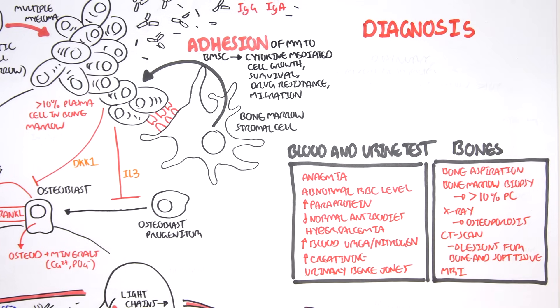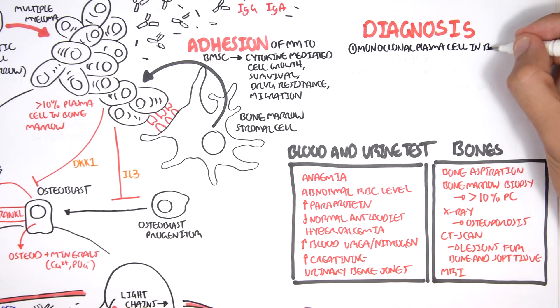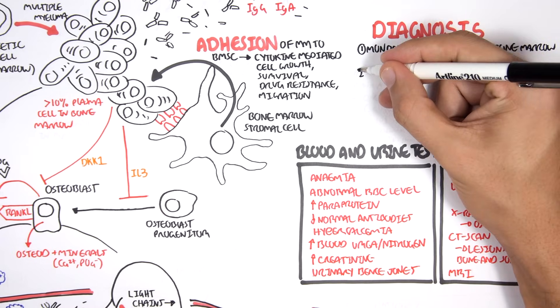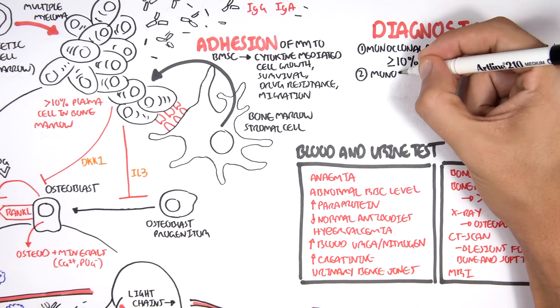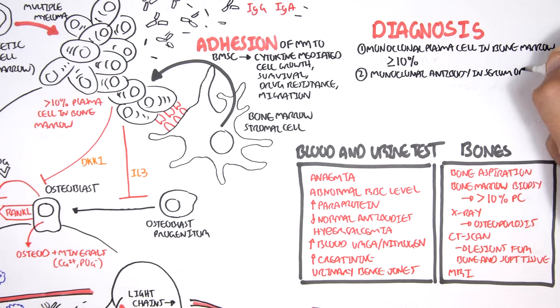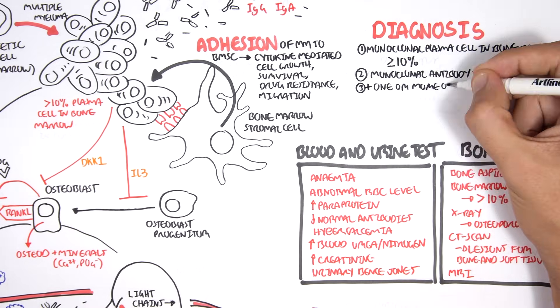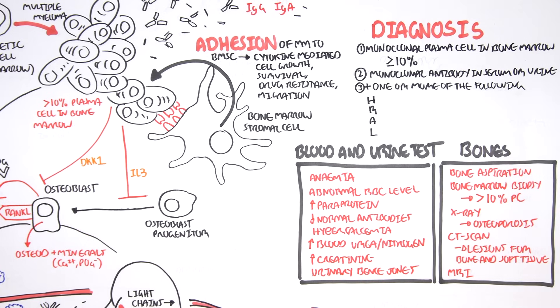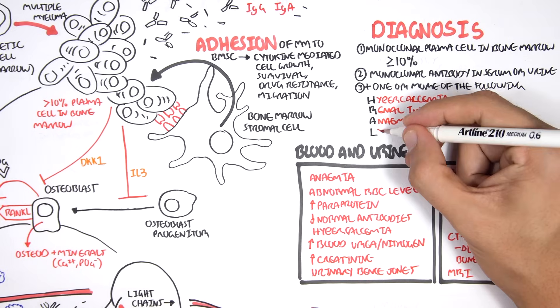The actual diagnosis of multiple myeloma is, one, the presence of monoclonal plasma cells in the bone marrow, 10% or greater through bone biopsy. Two, the presence of monoclonal antibodies or the paraproteins in serum or in urine. And three, one or more of the following. I have an acronym HRAAL or some people use CRAB. H is for hypercalcemia. R is for renal failure. A is for anemia. And L is for lytic bone lesions. So that's how you diagnose it.